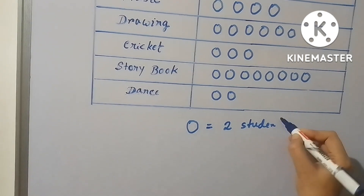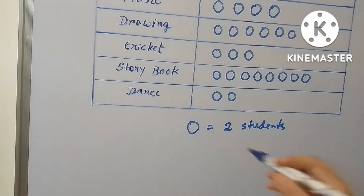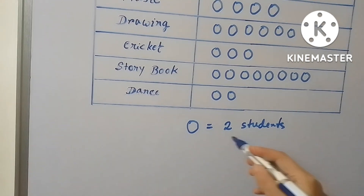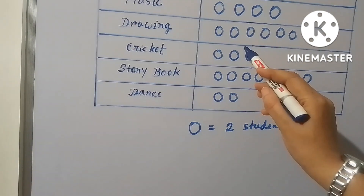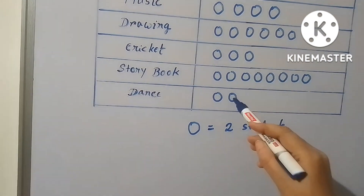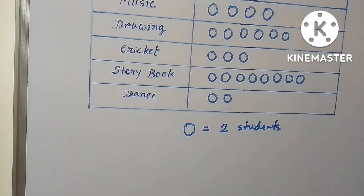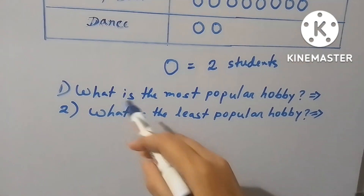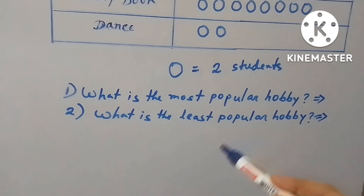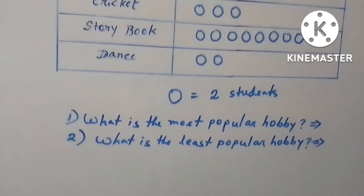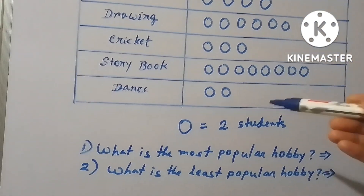For the first case, four circles multiplied by two means eight students love music. Similarly we have to calculate the others. Now we can solve different types of questions from this pictorial form.